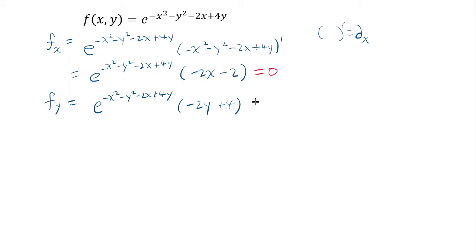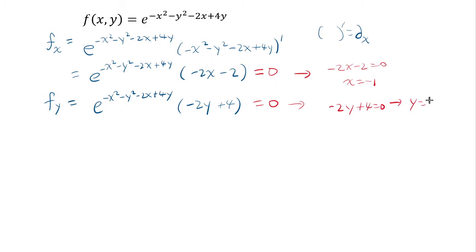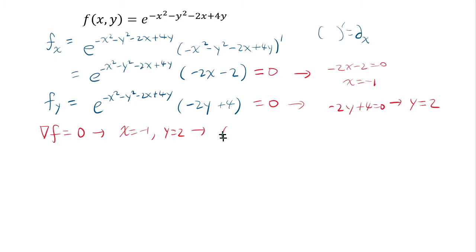Now we look for critical points where both derivatives vanish. Because the exponential can never be zero, we need negative 2x minus 2 = 0, giving x = negative 1, and negative 2y plus 4 = 0, giving y = 2. Since the gradient of f must equal zero at a critical point, negative 1 comma 2 is the only critical point.